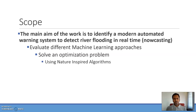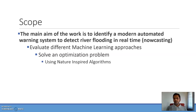We use the term 'nowcasting' because we want to predict river flooding within a short lapse of time — that is within three hours — as opposed to forecasting, which can predict over longer periods of time. We tackle this problem by identifying and looking at machine learning algorithms, and we've noticed that several machine learning algorithms on their own might not suffice, so we used nature-inspired techniques for optimization.